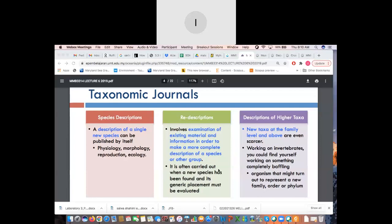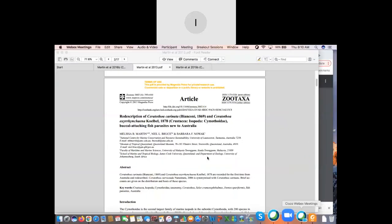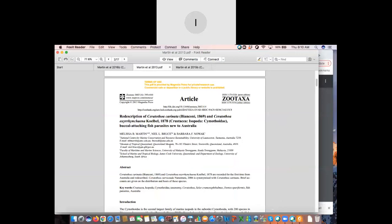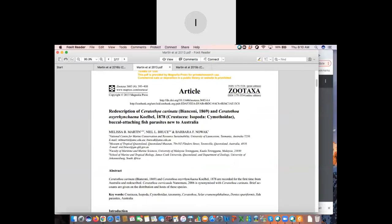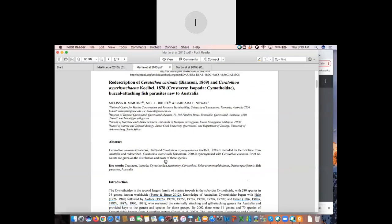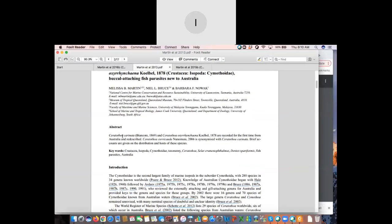So existing material and information in order to make a more complete description of a species or other group. So, again, when you mean my more complete description, it's according to modern taxonomic, written taxonomic times in comparison to what was before. It is often carried out when a new species has been found and its generic placement must be evaluated. So what they mean by this is sometimes perhaps I can give you a re-description. So this is a paper that I did which is a re-description of two known species. Example, Ceratothoa Carinata and Ceratothoa Oxyrrynchaena. So, these are actually recorded for the first time in Australia. However, this species have actually been found previously in other places but the description was actually very poor so we needed to re-describe this.